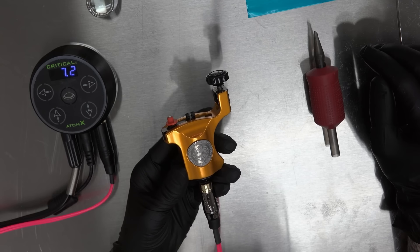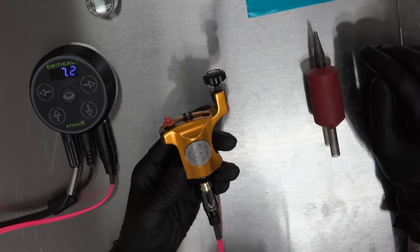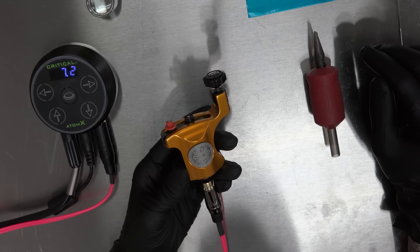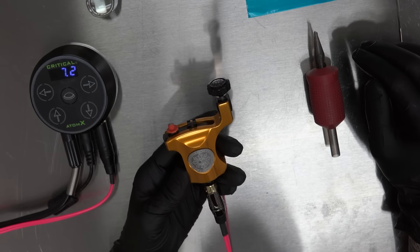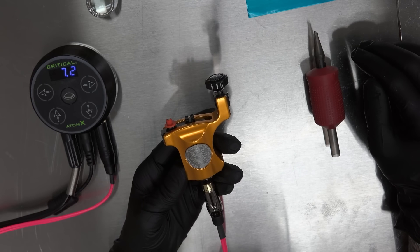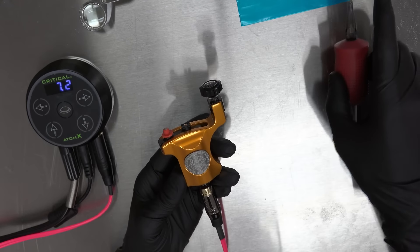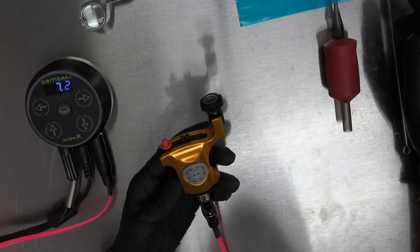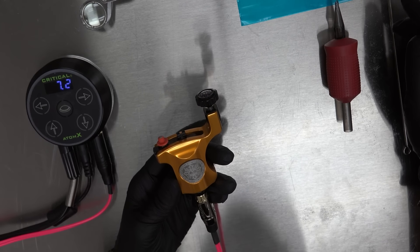This machine takes the needle on the bar. Not everybody likes cartridges or cartridge machines. So if you want a needle on the bar machine, you want to get away from cartridge machines, this would be the machine I would advise or offer to you. It's fantastic. I think you guys will really, really love it the way we all do here in the studio.